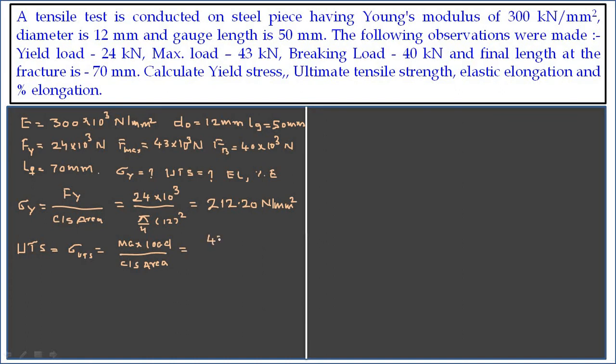That is, we need to calculate the original area here. So the maximum load is 43 into 10 raise to 3, again divided by pi by 4 into 12 square. So if you calculate, you are going to get a value of 380 Newton per mm square.